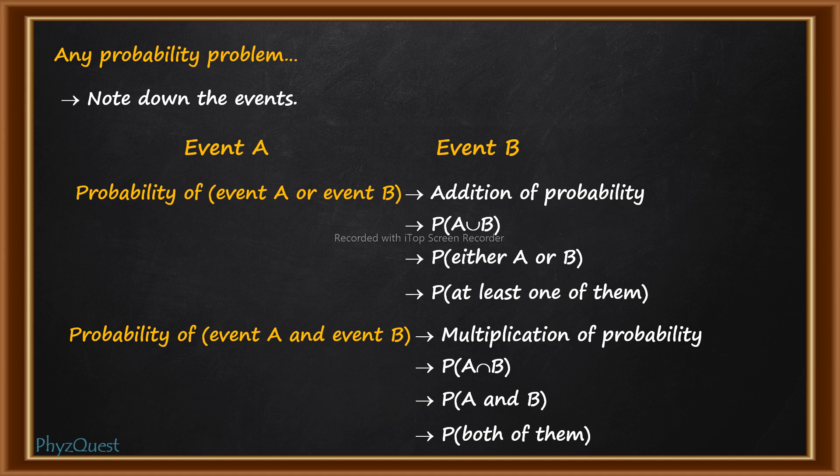Now we will proceed to each of the rules. The first one is known as the addition rule of probability. The second one is the multiplication rule of probability. Each of them has various sub-cases as well, which we will discuss now.